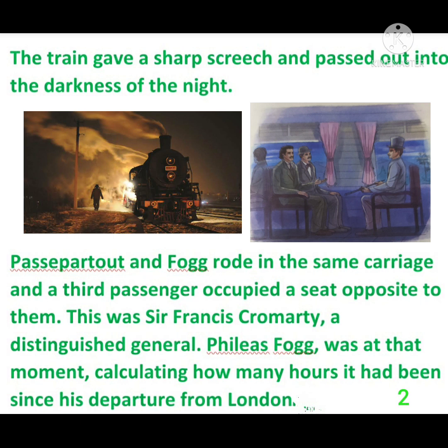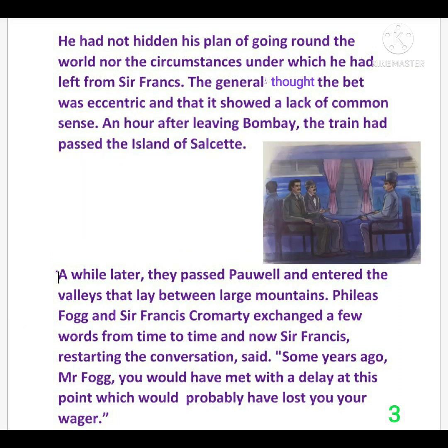Passepartout and Fogg rode in the same carriage, and a third passenger occupied a seat opposite to them. This was Sir Francis Cromarty, a distinguished general. Phileas Fogg was at that moment calculating how many hours it had been since his departure from London. Sir Francis acts as a guide for them in India. Fogg had not hidden his plan of going around the world, nor the circumstances under which he had left, from Sir Francis. The general thought the bet was eccentric, meaning unusual.